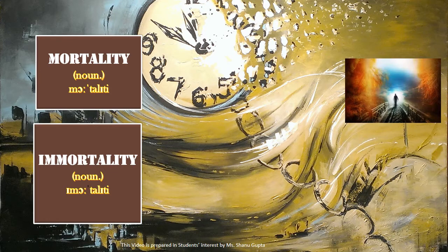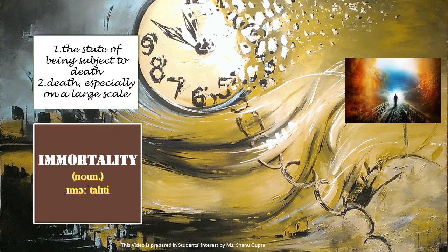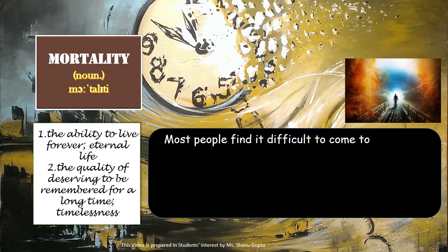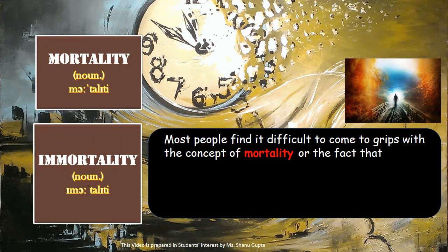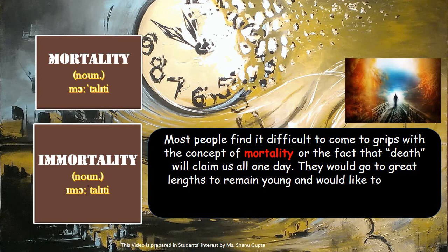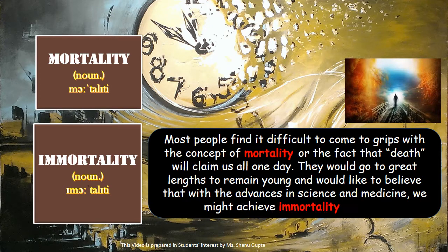The related words describing their respective qualities are 'mortality' and 'immortality'. Mortality is the state of being subject to death, and we sometimes use this word in the phrase 'mortality rates' to refer to death especially on a large scale — like a region which has suffered an epidemic outbreak will have a higher mortality rate. Immortality is the ability to live forever. You might encounter these words in passages like: 'Most people find it difficult to come to grips with the concept of mortality, or the fact that death will claim us all one day. They would go to great lengths to remain young and would like to believe that with advances in science and medicine, we might achieve immortality one day.'